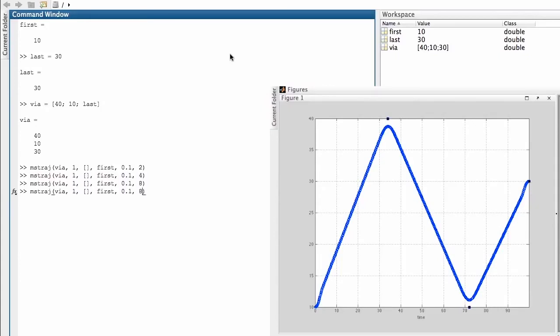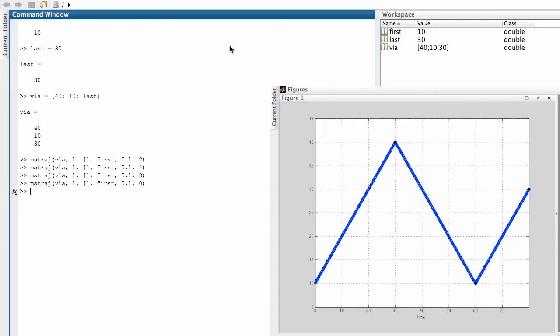If I set the acceleration time to 0, we exactly reach the via points but the trajectory will be discontinuous. The acceleration will be infinite at the via points. Let's go back to something a little bit more gentle.